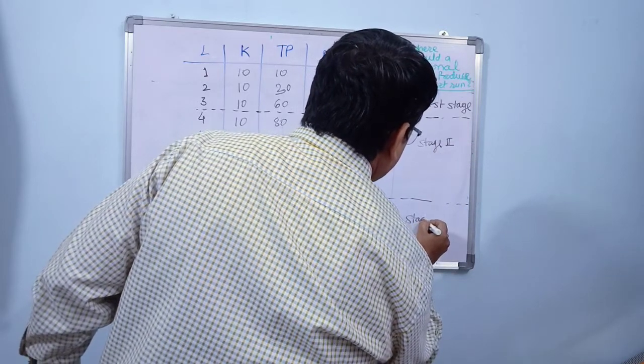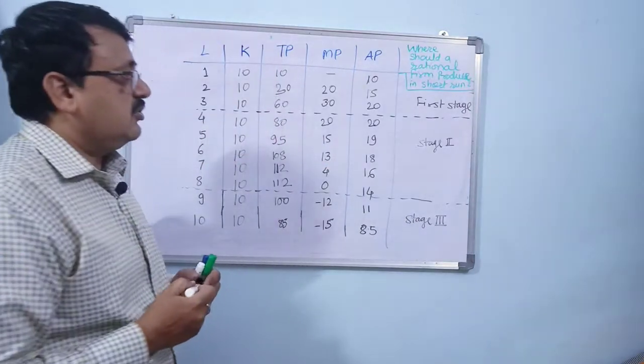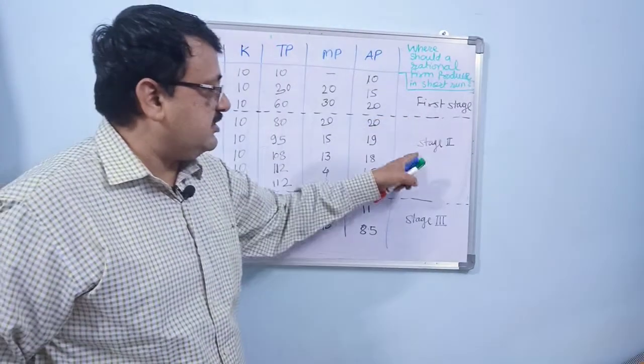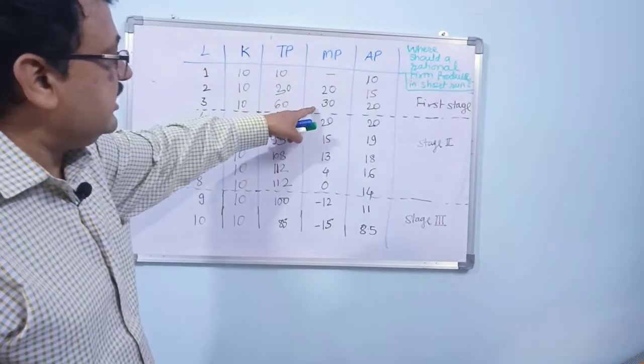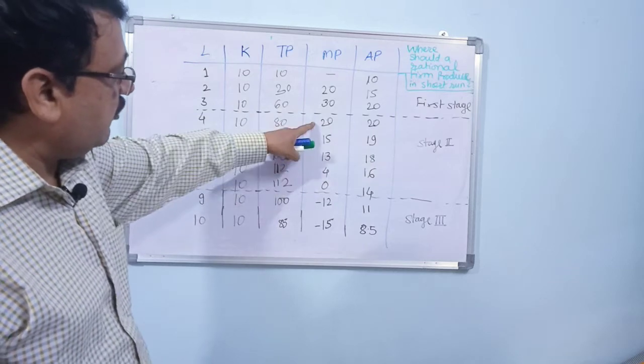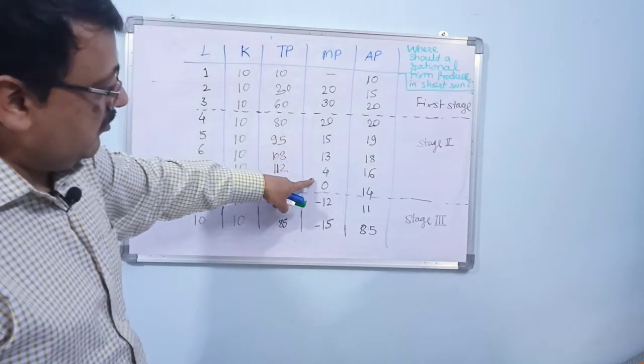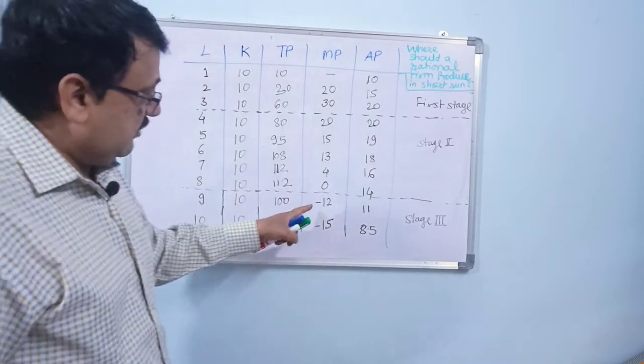How we have divided it: Initially the marginal production was increasing, that is first stage. Then it is kept constant and decreasing slightly but not negative, so that is stage two. The moment it is negative, we have taken it in stage number three.